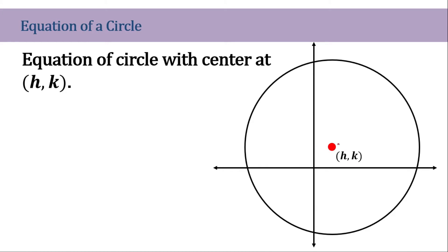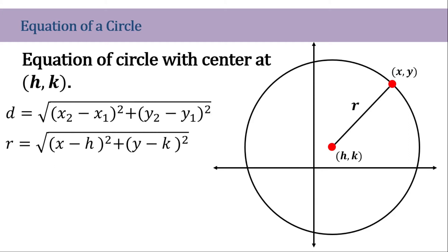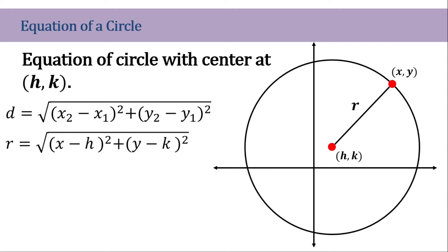It could be (1,1), (2,2), or any coordinates. And we have a point on the circle as well. So this coordinate is (x,y) — that's any other coordinate as well. So now to get the radius of this, we need to use the distance formula. We need to substitute all the given that we have, and the distance that we're going to get is the radius.